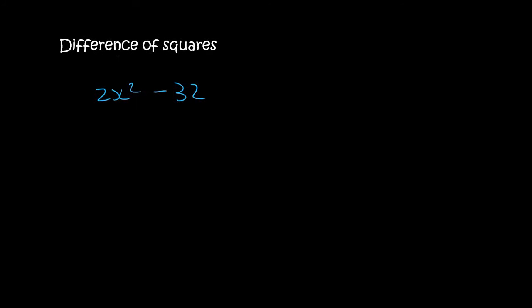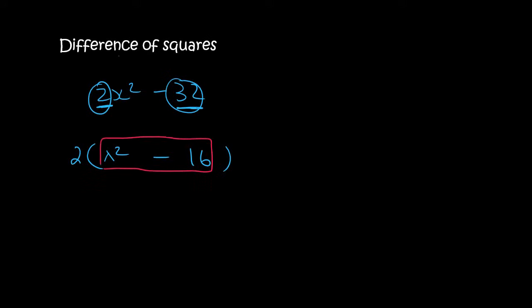Now, technically you can't do difference of squares directly here, because 2 is not a square number and you can't get something times something to give you 32. But remember: step 1 — always see what common factor you can take out first. The number 2 fits into both terms, so we take it out. You're left with 2(x² - 16). Now x times x gives x², and 4 times 4 gives 16, so that becomes 2(x + 4)(x - 4).